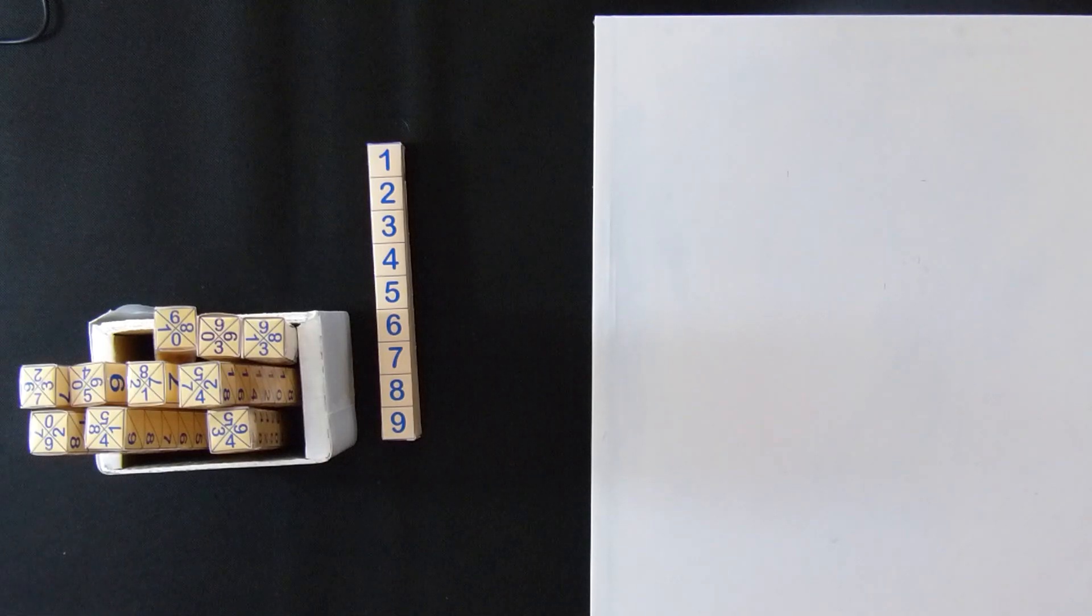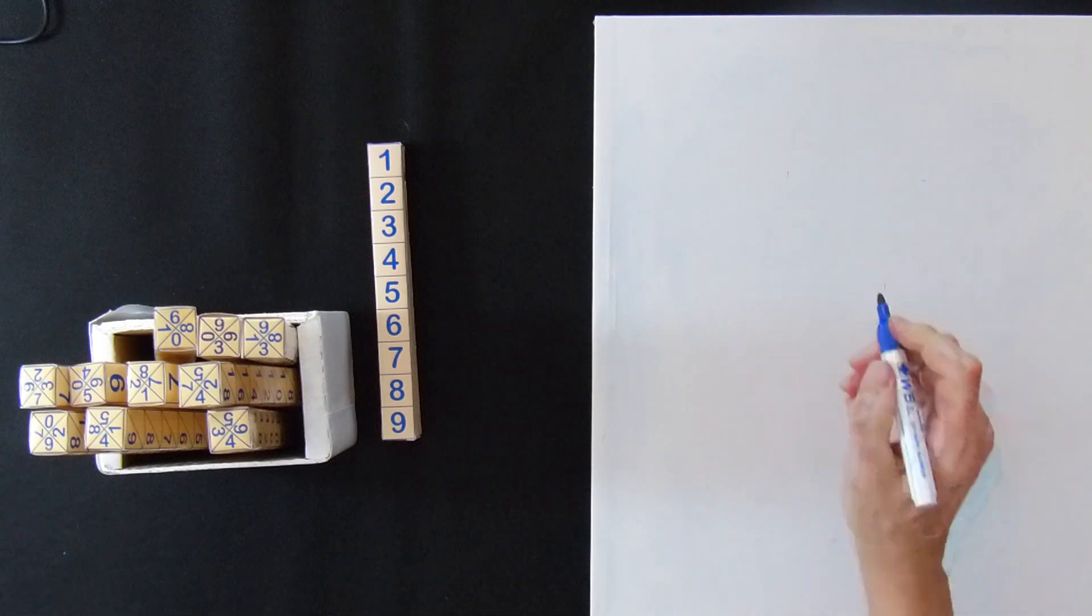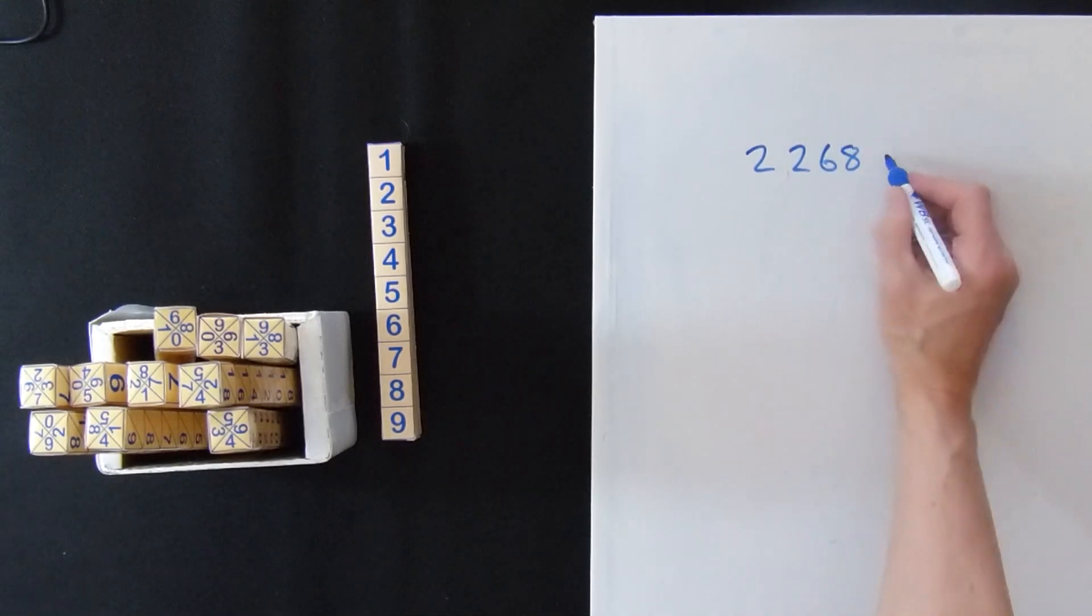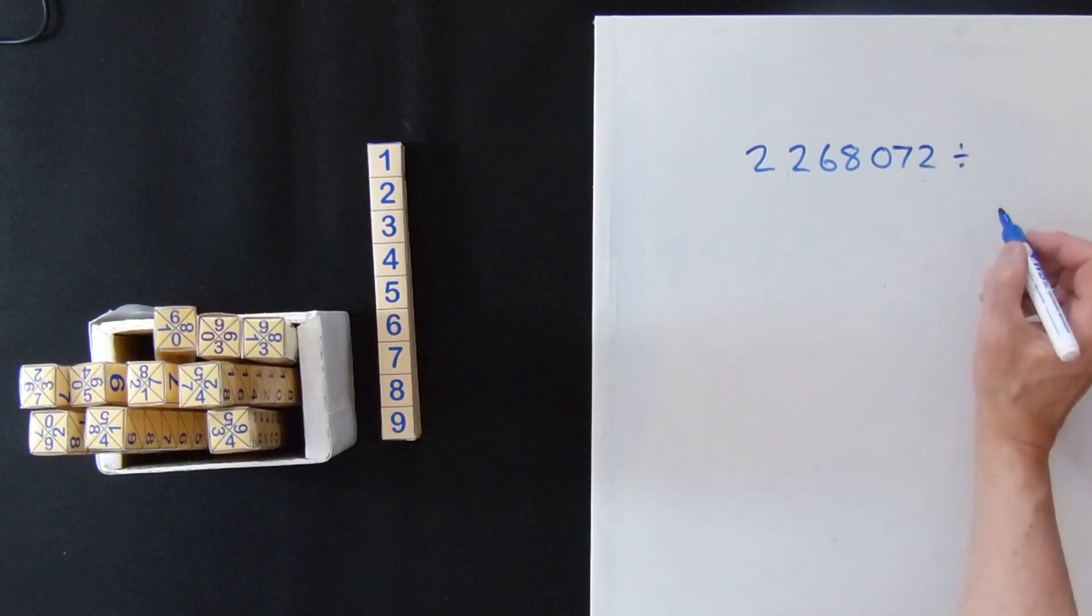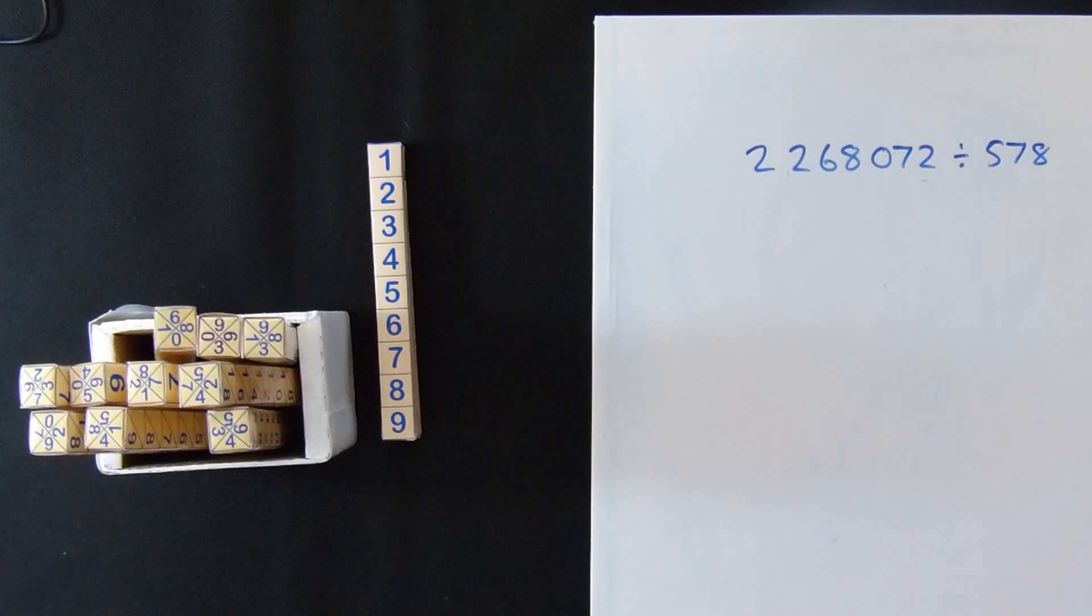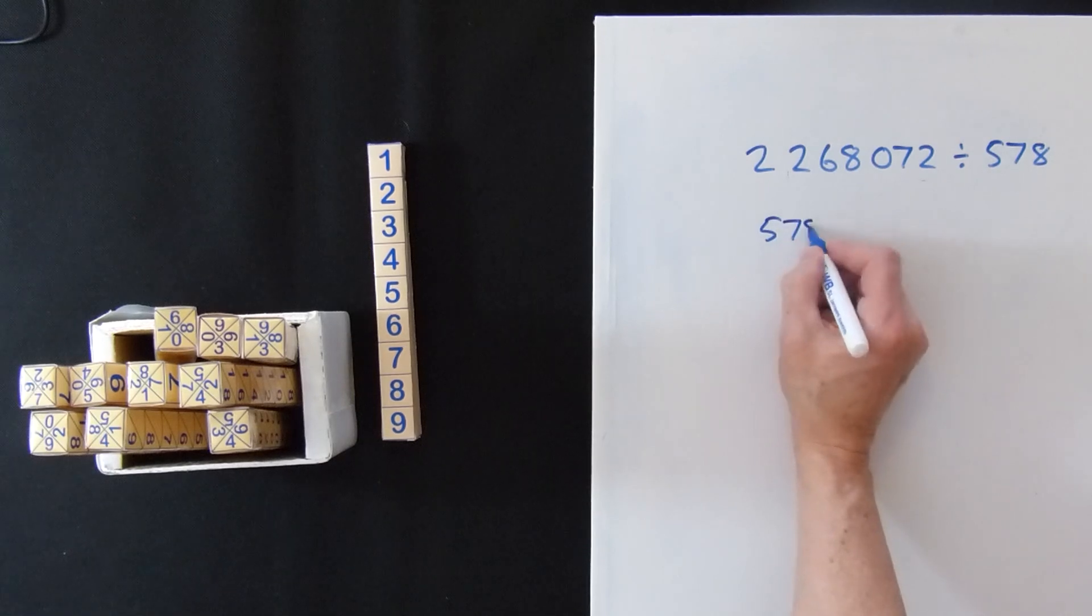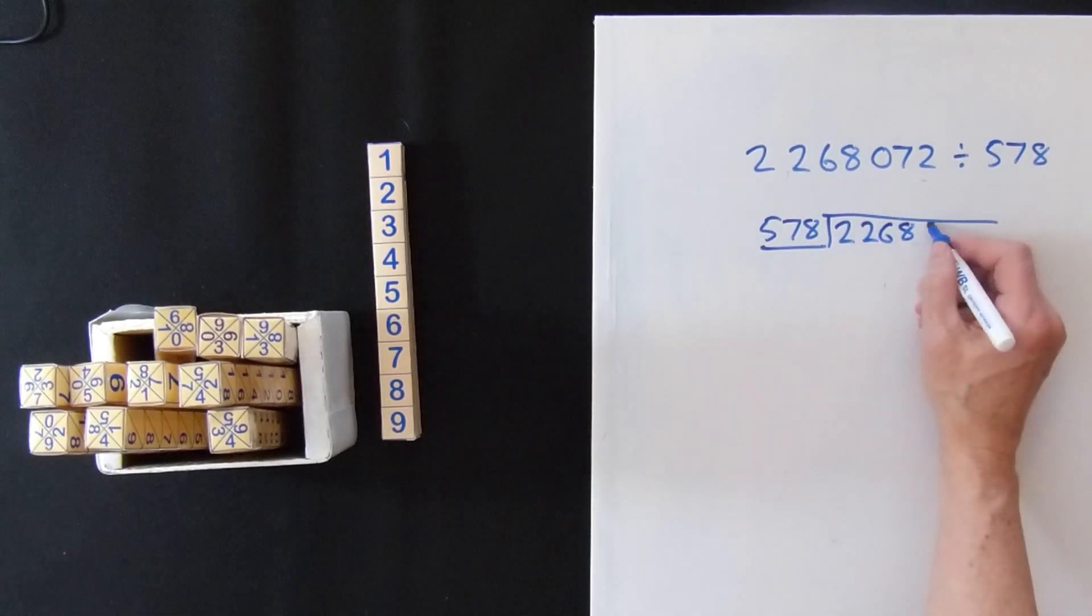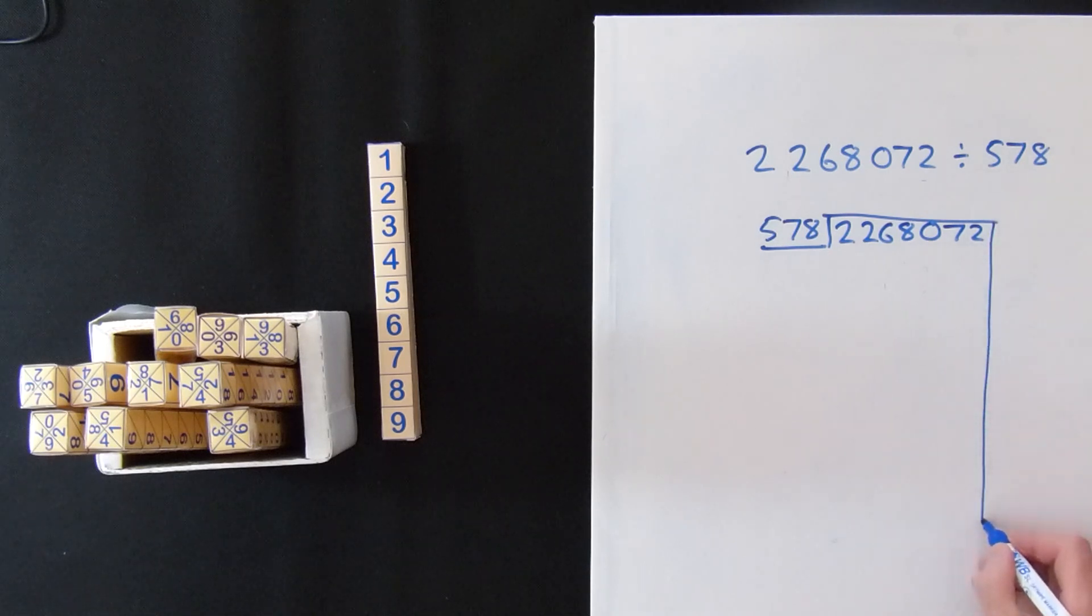Right, now we're going to do a giant long division. We're going to do 2268072 divided by 578. Bet you didn't think you'd be involved in a division this big. But we're using Napier's bones. So you must at this stage realise that this is not going to be that difficult. We're going to have to write out the sum, so that's going to be big. So we're going to have to go 578 into 2268072. And we do this big line down the side.